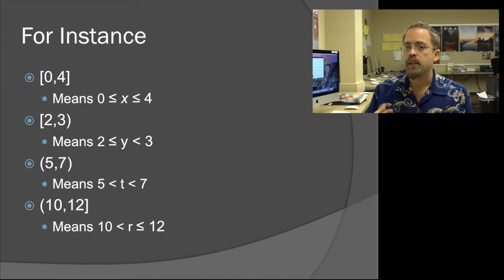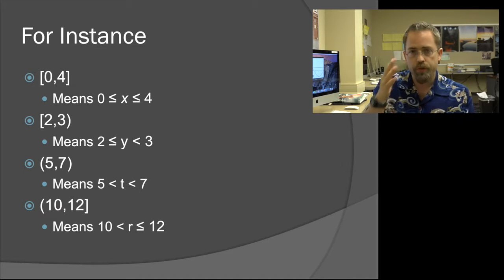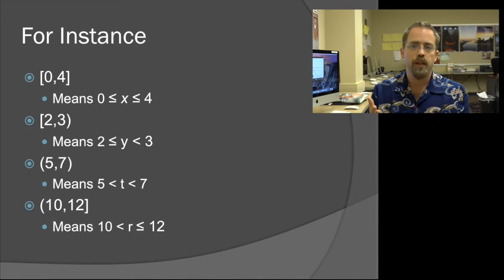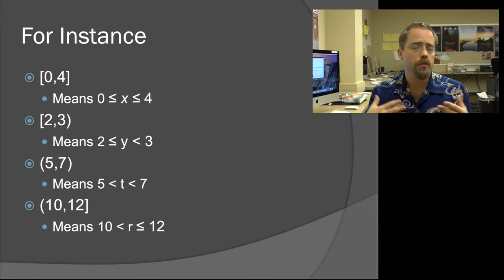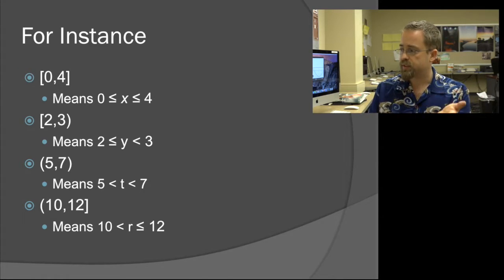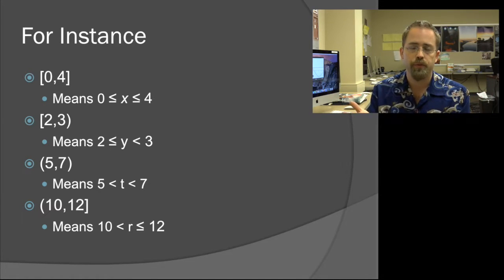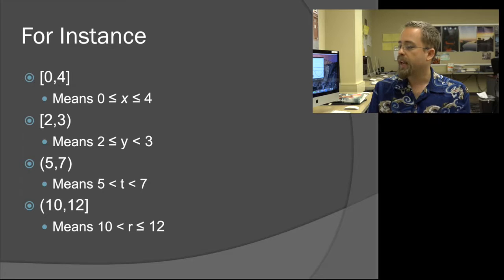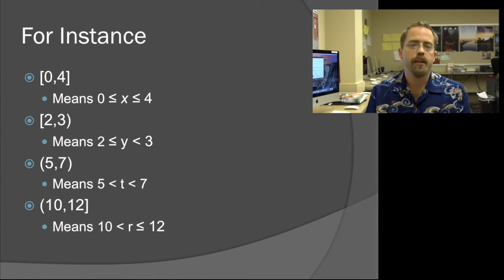But you can mix this up. Let's add in one that's not or equal to. So we've got at 2 the square bracket - that means you're allowed to touch 2 or equal to 2. But then on the 3 we've got the curvy one, so you're not allowed to be equal to 3. We would have written this in the past as 2 ≤ y < 3. You can use two of the non-touching, so (5,7) means the range from five to seven but not including five or seven. And you can do the other combination, (10,12], which means from 10 to 12, you're allowed to be 12 but not allowed to be 10.